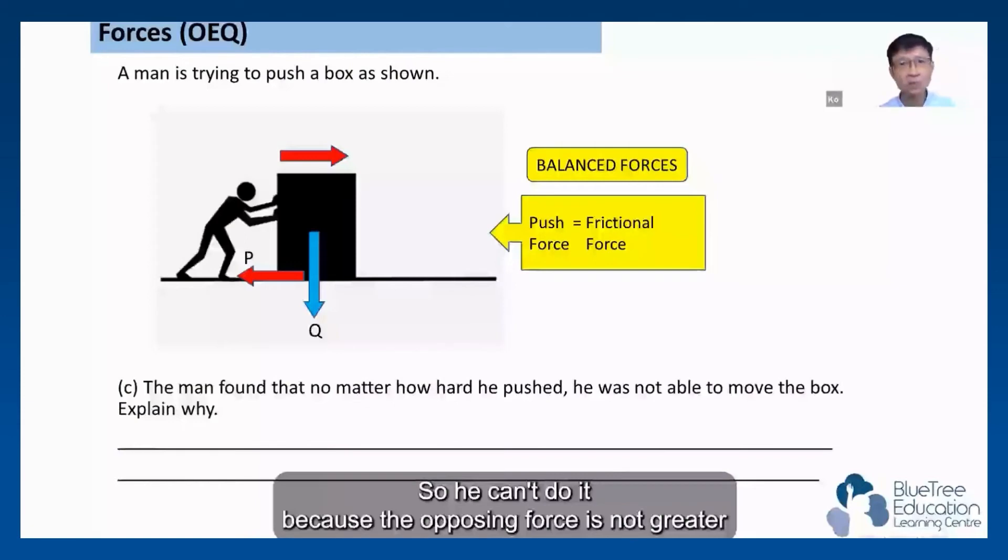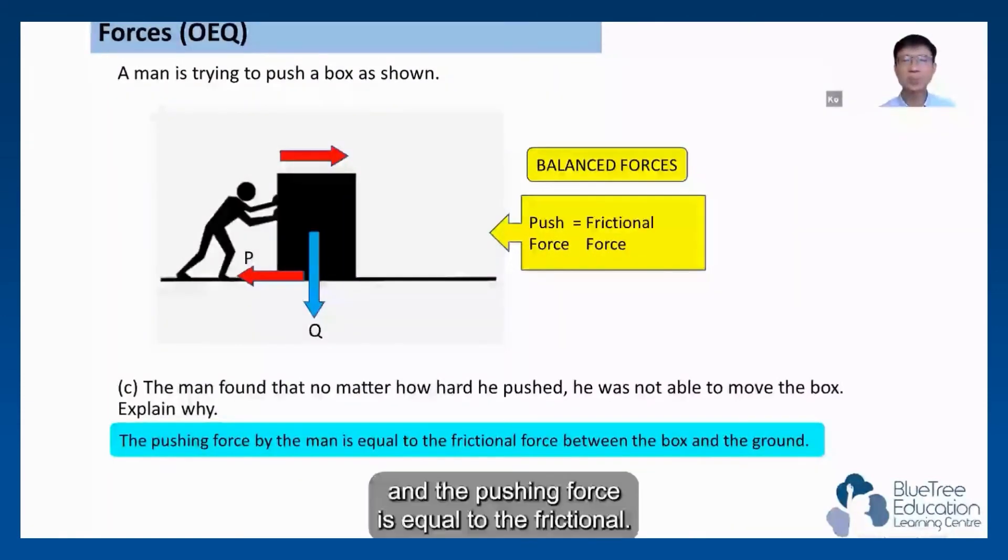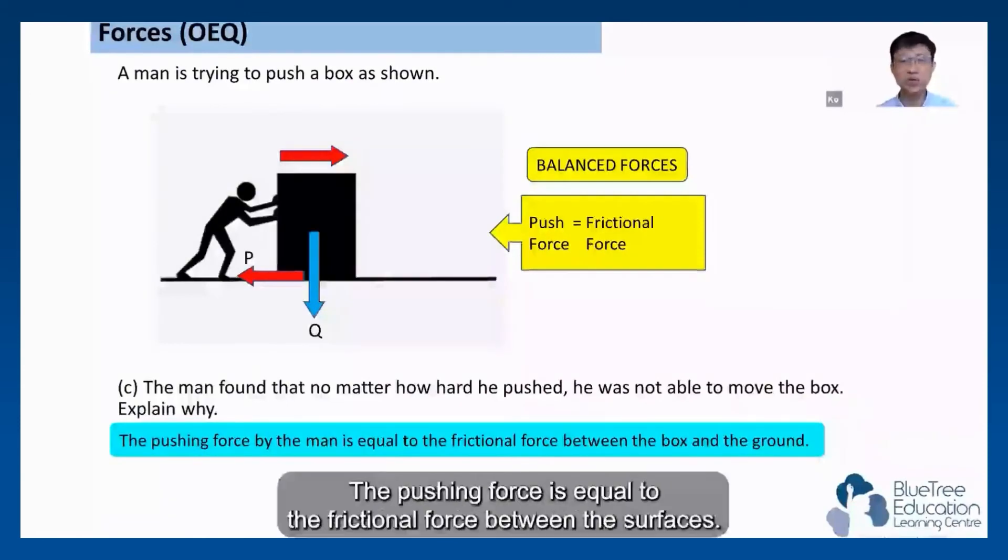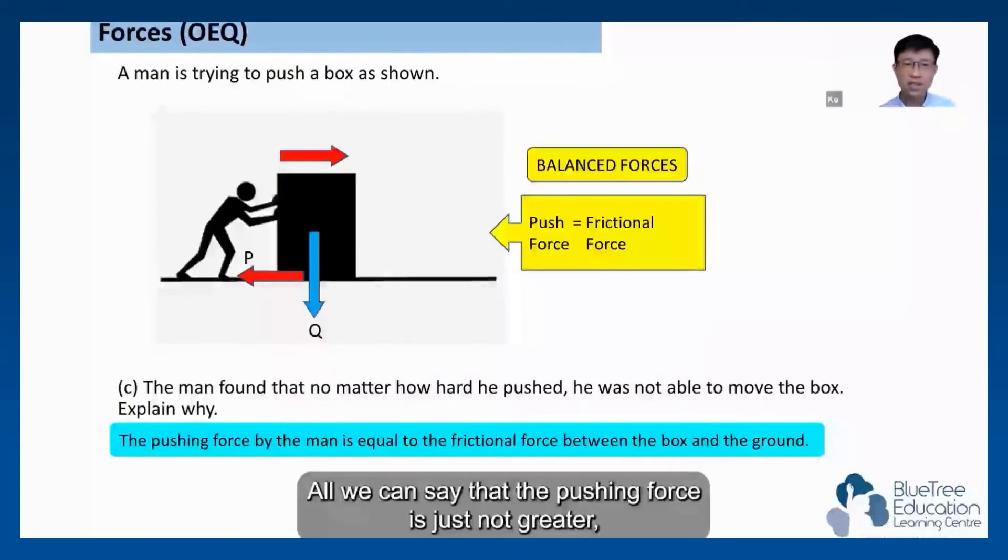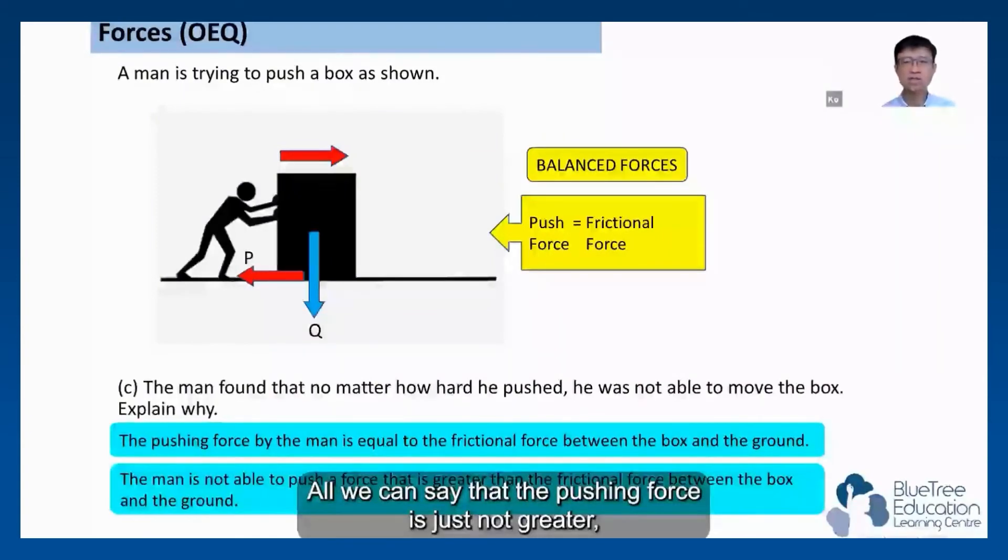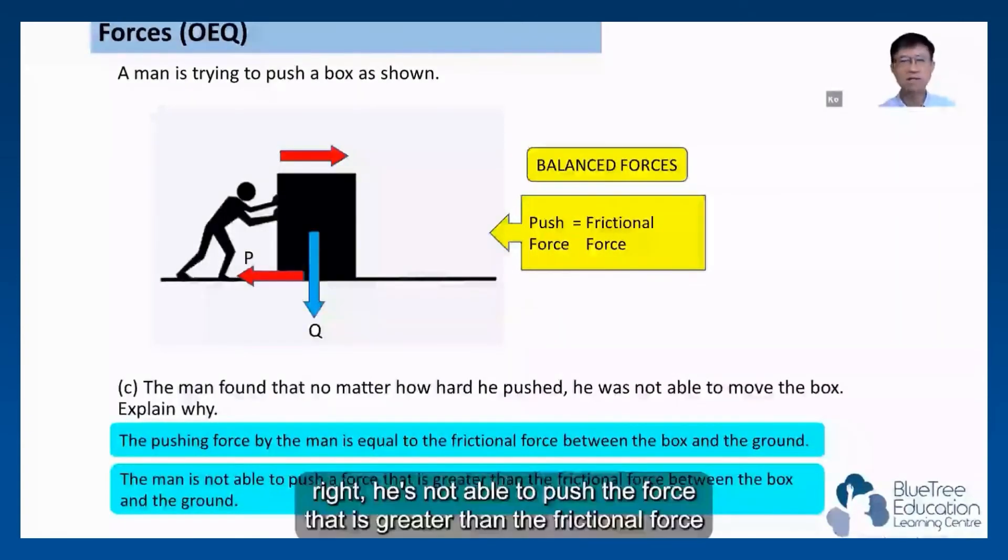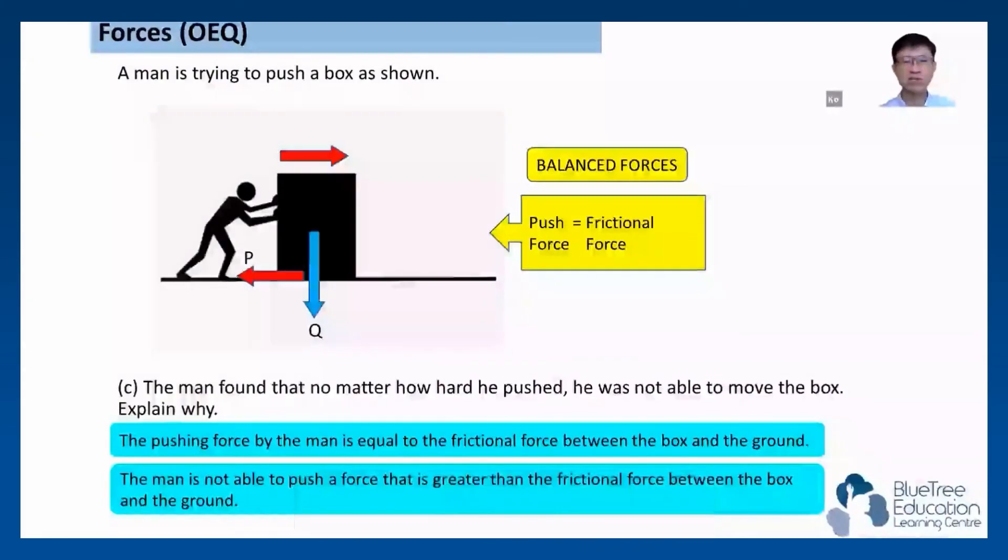So he can't do it because the pushing force is not greater. And the pushing force is equal to the frictional force between the surfaces, or we can say that the pushing force is just not greater. He's not able to push a force that's greater than the frictional force and therefore the box does not move.